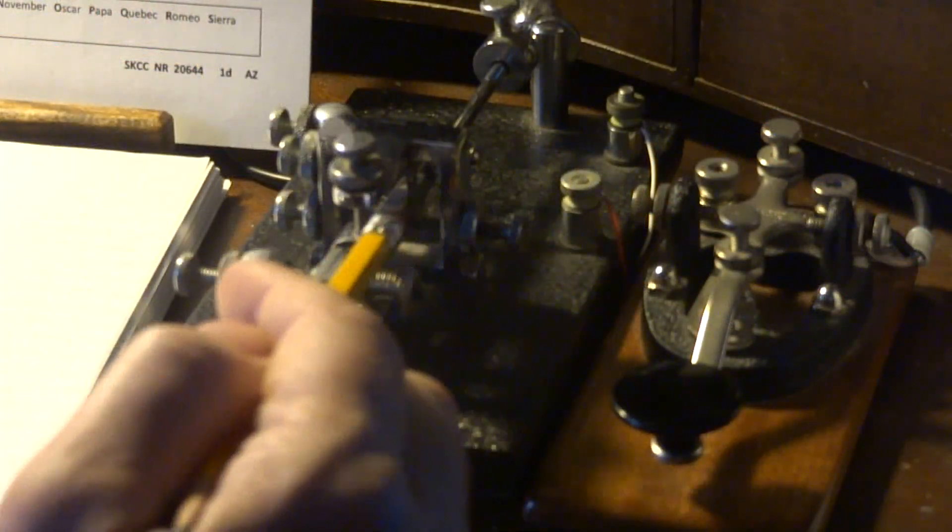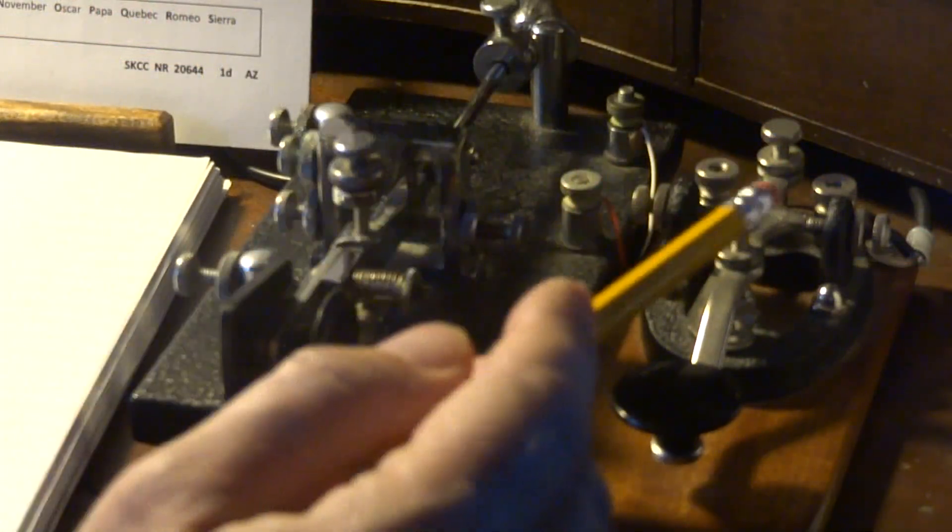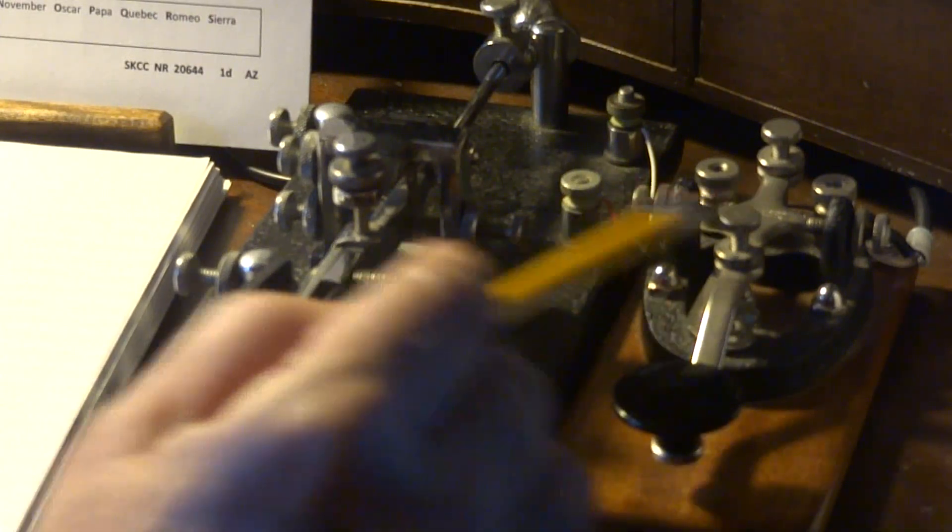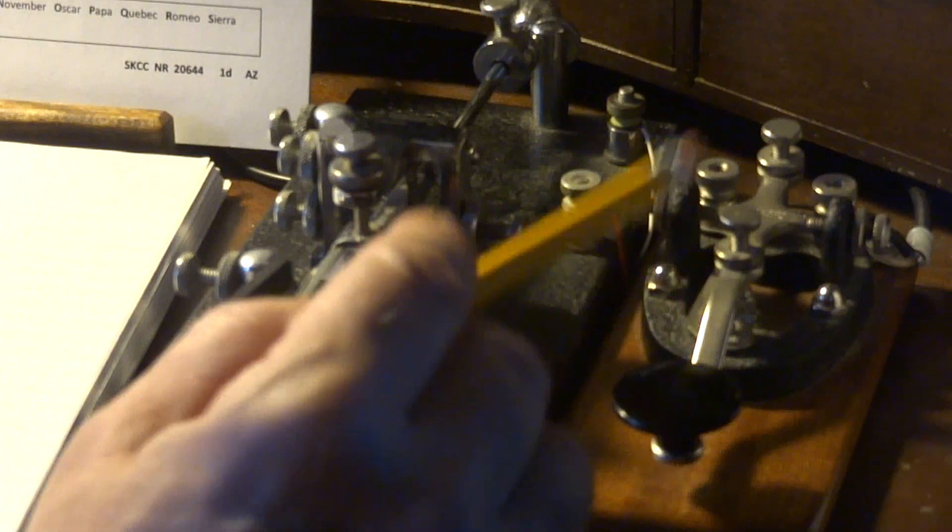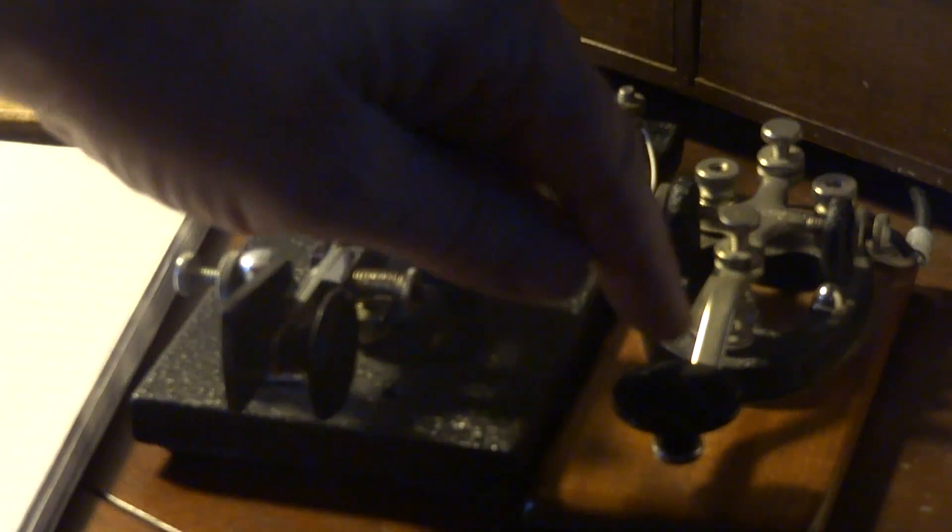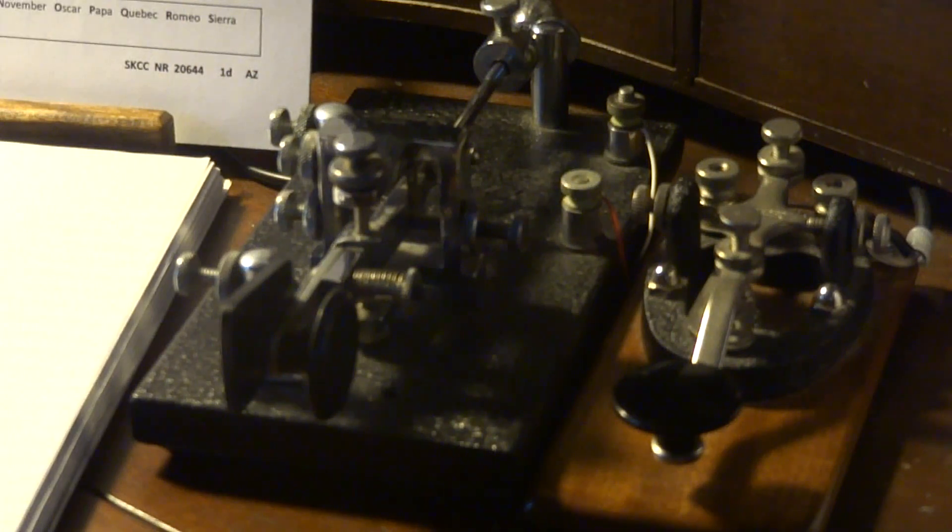Let me zoom in on the camera here and I'll show you what I'm talking about. So both of these keys are SpeedX keys. This is a late 1960s vintage straight key, and by straight key it's basically just an on-off switch.